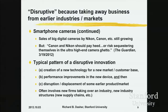That's a pretty big disruption of the existing camera industry. The big high-end SLR digital cameras are still growing well — that market grew about 30% last year. But to quote the Guardian, Canon and Nikon should pay heed or risk sequestering themselves in the ultra-high-end camera ghetto. This is a classic example of disruptive innovation: creation of a new technology for a new market, performance improvements over time, and now disrupting or displacing some earlier product and market.